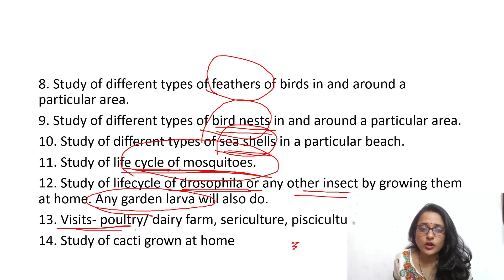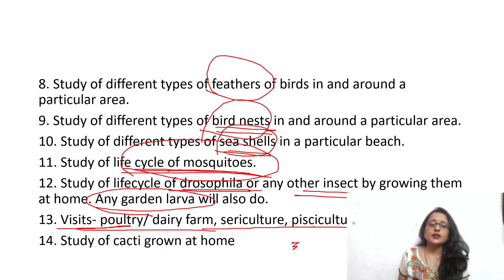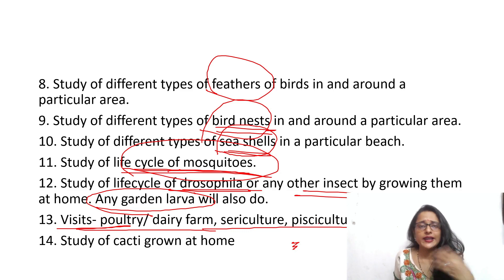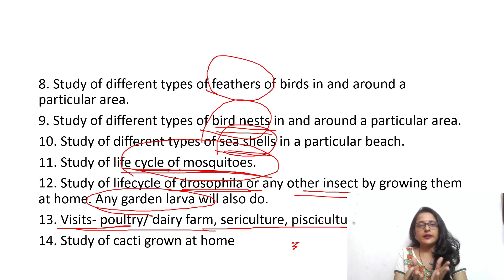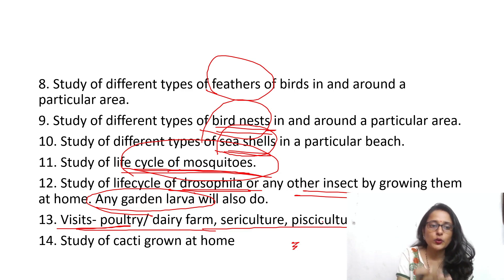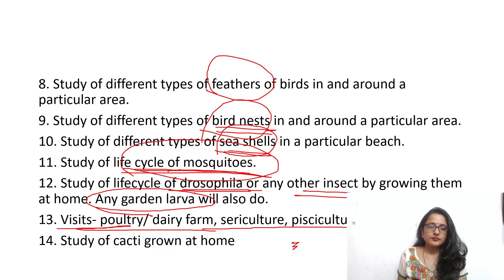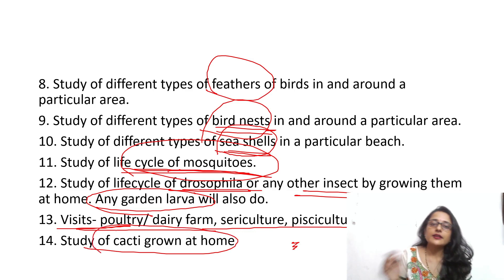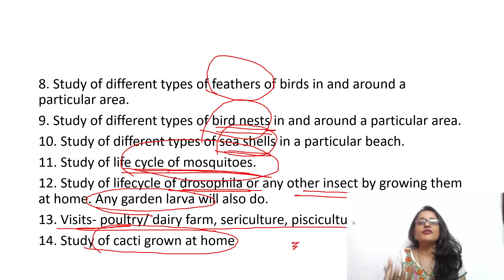You can also visit a poultry farm, dairy farm, sericulture unit, pisciculture farm, wildlife sanctuary, or national park in your area and write a project about it. For example, at a poultry or dairy farm, document what animals are kept, what products they provide to the market, and what diet or antibiotics they are given. Additionally, you can study various types of cacti that can be grown at home, listing which species are suitable and what the benefits of keeping them indoors are.